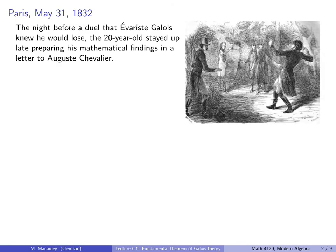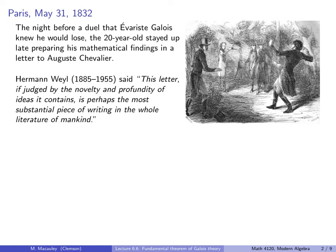This was the final day of Evariste Galois. The night before a duel that he knew he would lose, the 20-year-old stayed up late preparing his mathematical findings in a letter to Auguste Chevalier. Herman Weyl, a famous mathematician born more than 50 years later, said that this letter, if judged by the novelty and profundity of ideas it contains, is perhaps the most substantial piece of writing in the whole literature of mankind.